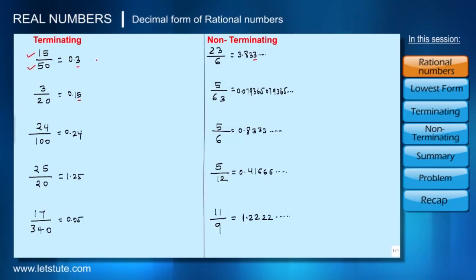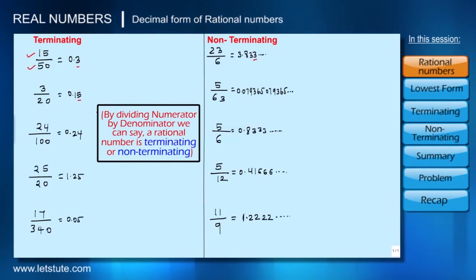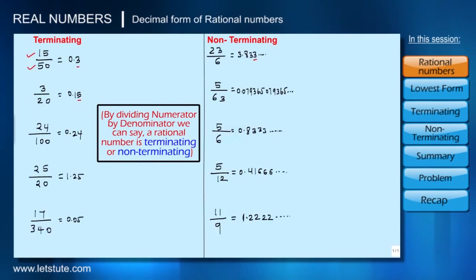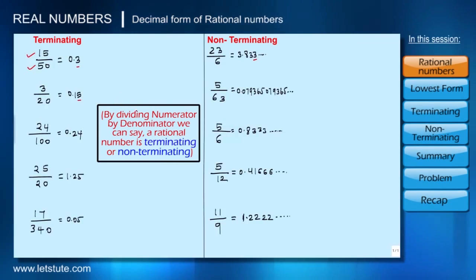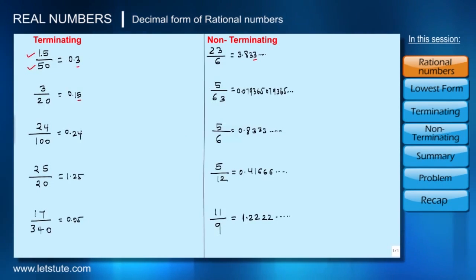We know that dividing numerator by denominator tells us whether a number is terminating or non-terminating, but this is a very time-consuming process. There has to be a more logical approach where, without actually dividing, we can determine whether a number is terminating or non-terminating. So let's first factorize the numerator and denominator in each case.